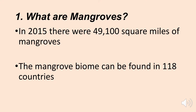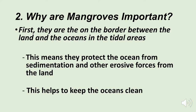Mangroves aren't that extensive compared to other biomes — in 2015 there were estimated to be about 49,000 square miles of mangroves in the world, distributed across 118 countries in the tropics and semi-tropics. Mangroves are considered just as important as coral reefs. Being on the border between land and oceans in tidal areas, they protect the ocean from sediment — which causes a lot of problems — by trapping sediment coming off the land and protecting the ocean from some of the erosive forces.